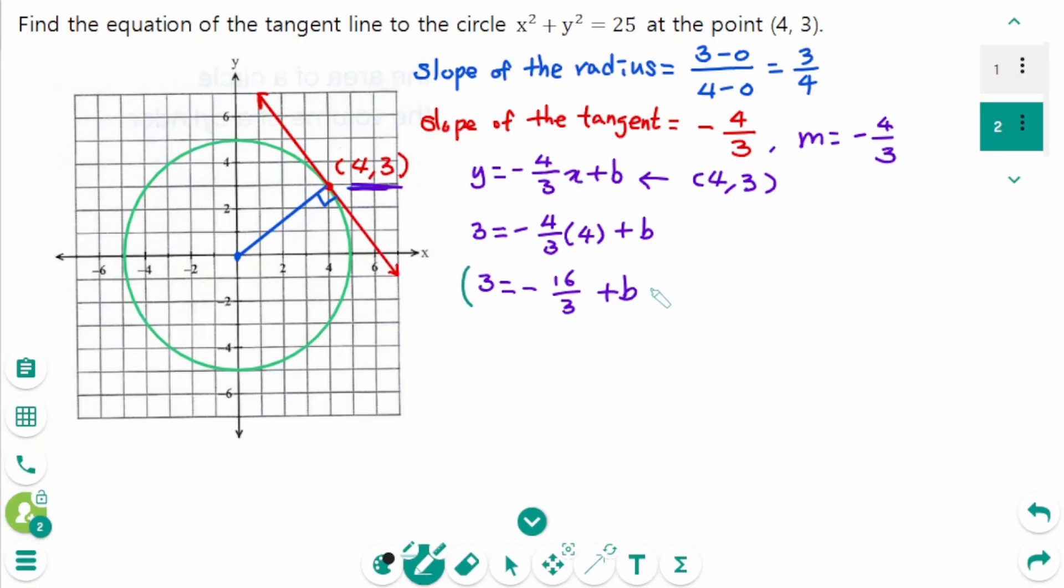Then multiply by 3 on each side. 9 equals minus 16 plus 3b. Then add 16 to each side. 25 equals 3b. Then b equals 25 over 3.